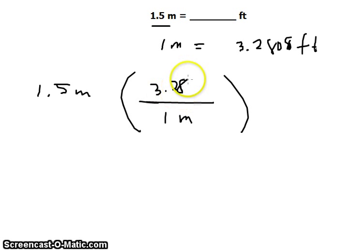So the unit for meters would have to cancel that, and now if you use your calculator you would get an answer like this one: 1.5 times 3.2808.